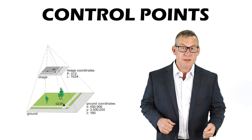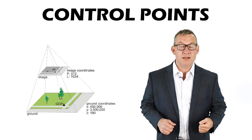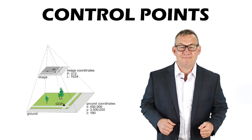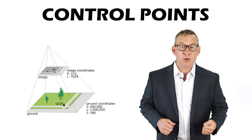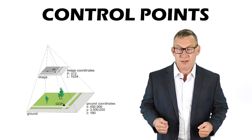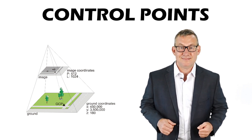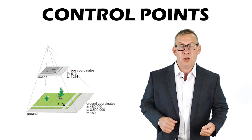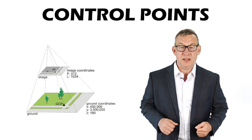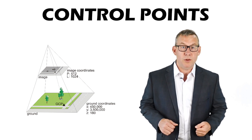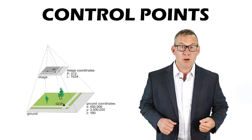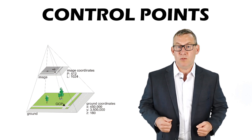Control points are points with known coordinates for both the digitized map and the target map projection. They are used to register unregistered datasets and can also be used to estimate the error in transformations, usually by analyzing the root mean square error. Sources for control points include surveys, GPS, cartometric maps, or existing registered layers.